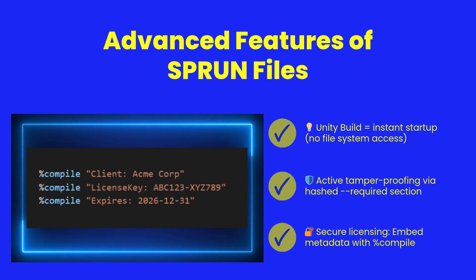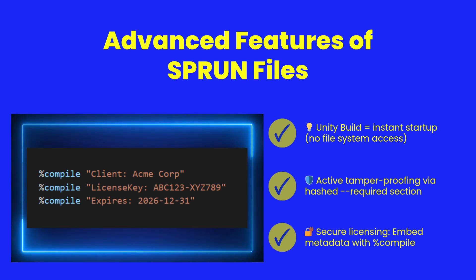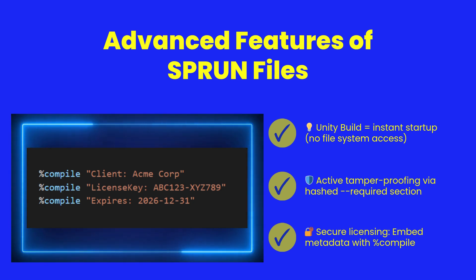.sp-run files include advanced deployment features. Unity build packs everything into memory, avoiding disk IO. Security is hardened — any change to the required block invalidates the entire file. And licensing is simple: embed custom tags like client names or expiration dates using %compile. It's secure, automated, and built-in.